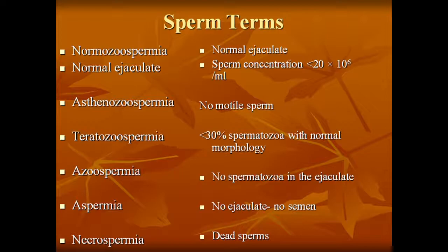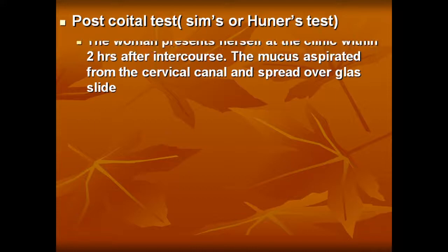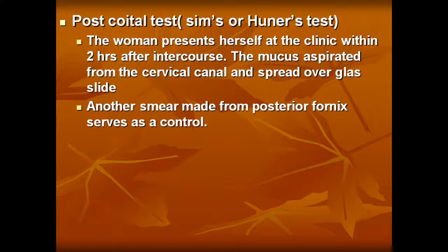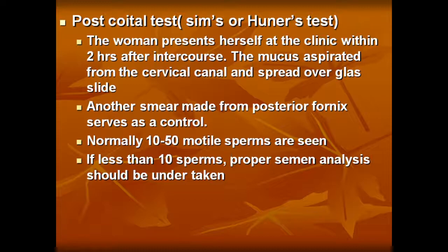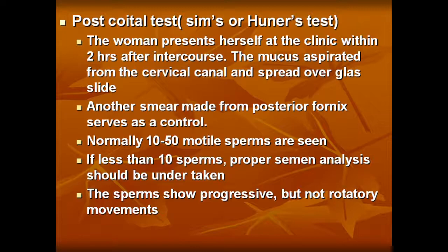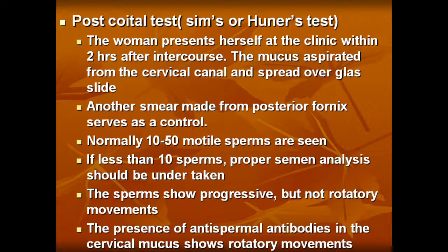Post-coital test (Huhner's test): although it is a test for male infertility, the woman is tested. The woman presents herself at the clinic within two hours of sexual intercourse. Mucus is aspirated from the cervical canal and spread over a glass slide. Normally there should be 10 to 50 motile sperms seen. If less than 10 sperms, a proper semen analysis should be undertaken. The sperm shows progressive but not rotatory movement. The presence of anti-sperm antibodies in cervical mucus shows rotatory movement.